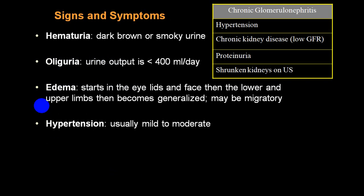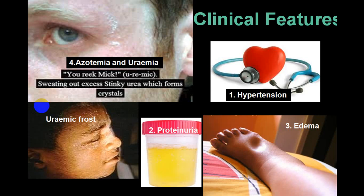The classical findings are hypertension, low GFR, and secondary findings of proteinuria, small scarred kidney on ultrasound, hematuria, oliguria, and generalized anasarca. Hypertension, proteinuria, generalized anasarca, azotemia or uremia, and uremic frost — where excess urea sweats out and forms crystals on the skin — is a finding identified in a good number of cases of chronic glomerulonephritis.